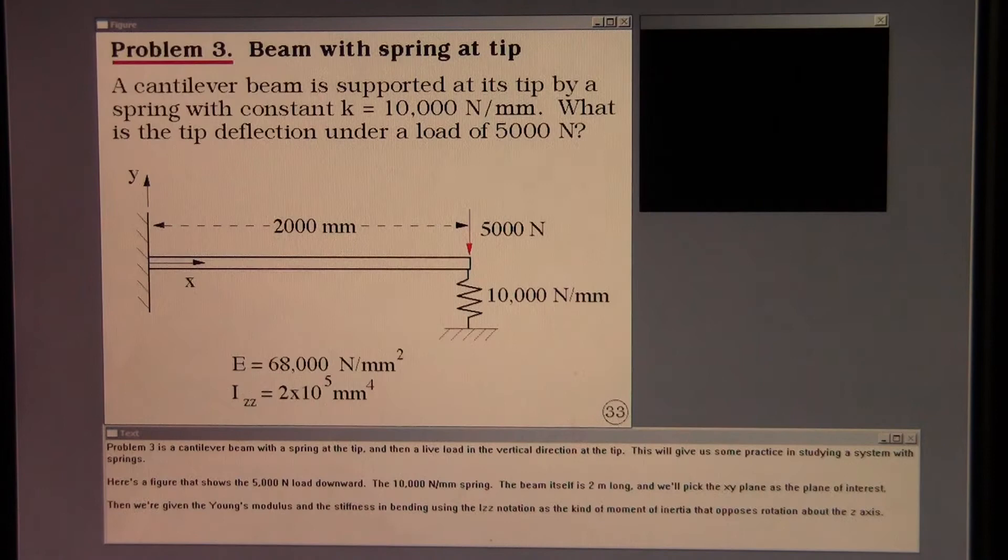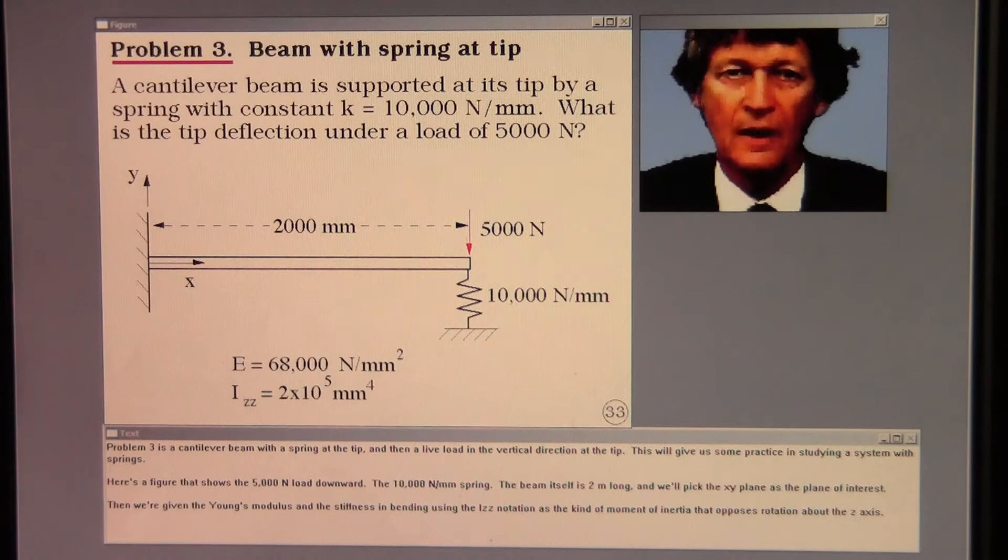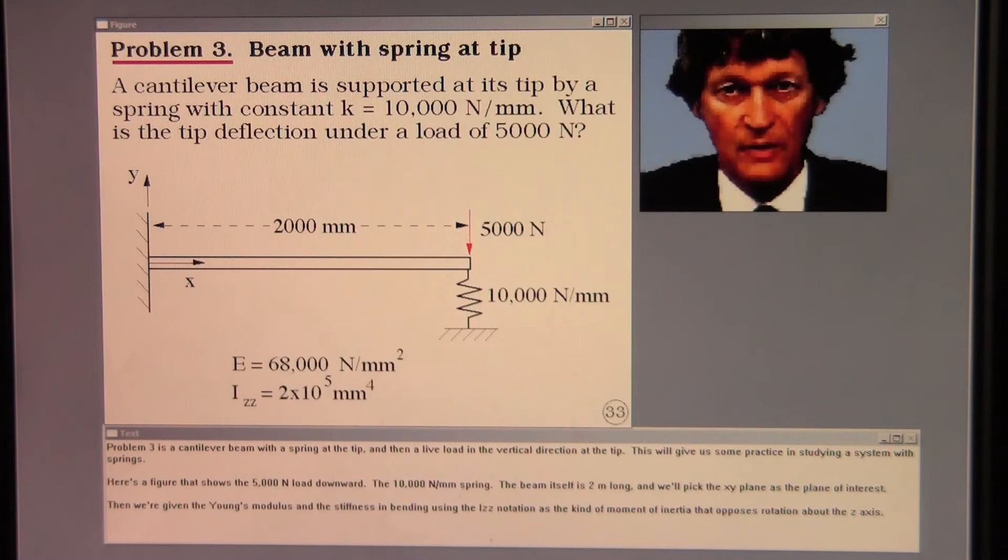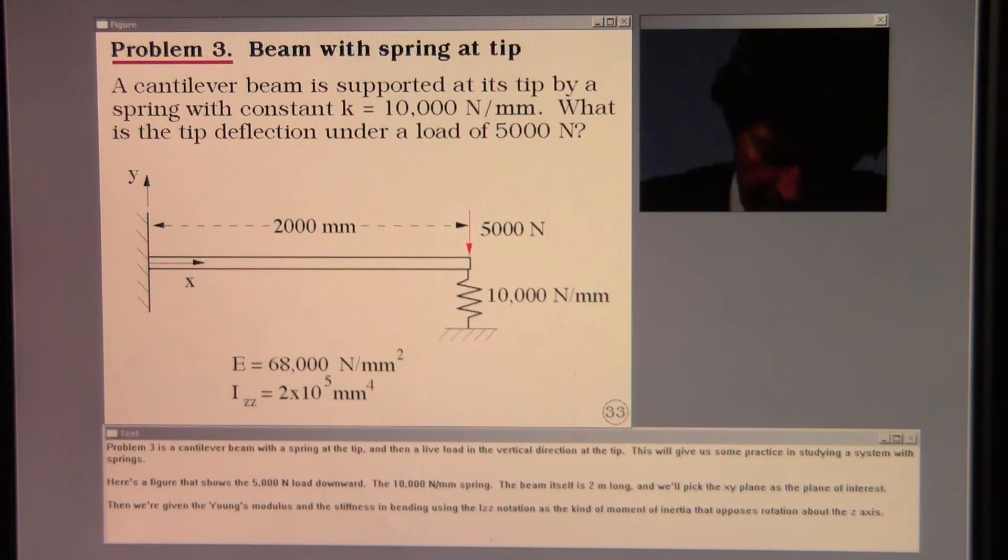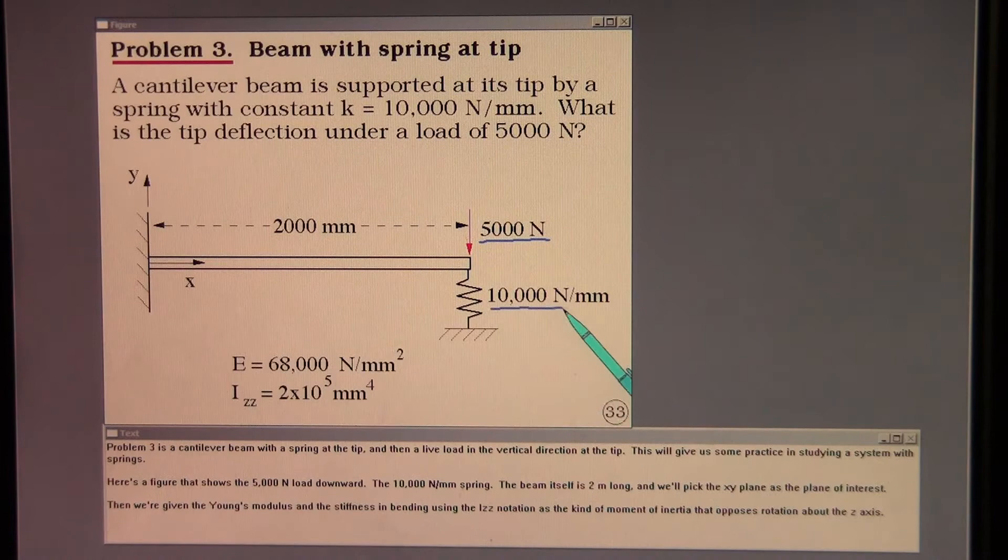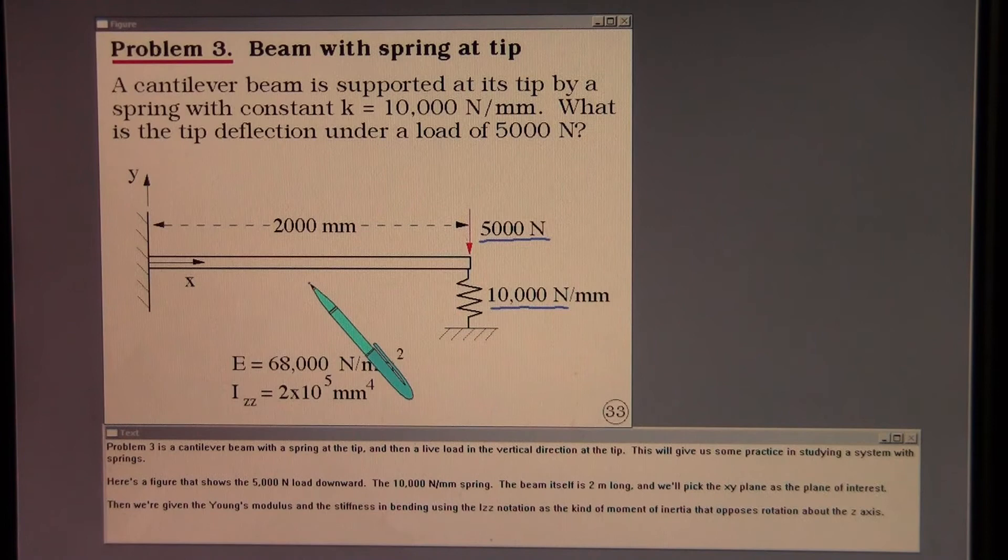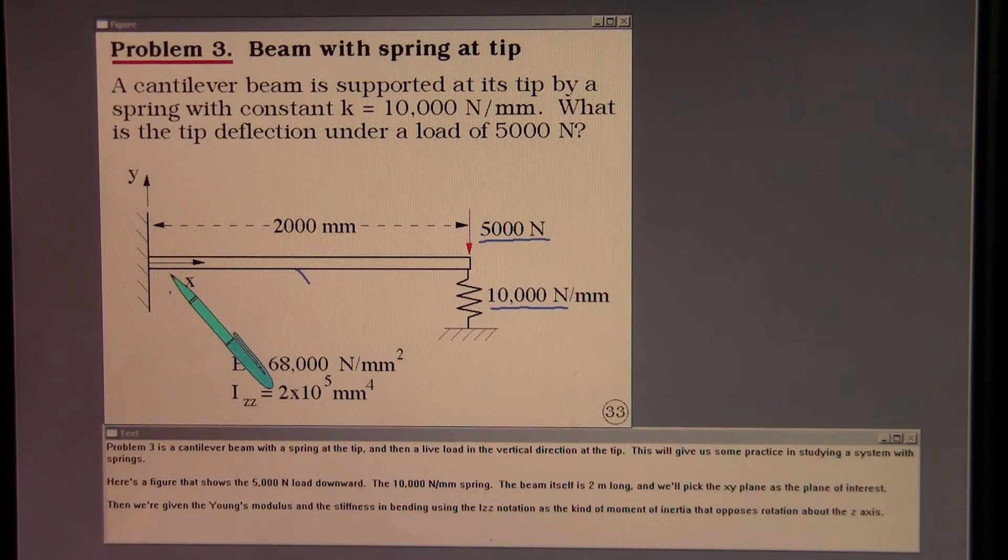Problem three is a cantilever beam with a spring at the tip. And then a live load in the vertical direction at the tip. This will give us some practice in studying a system with springs. Here's a figure that shows the 5,000 newton load downward. The 10,000 newton per millimeter spring. The beam itself is 2 meters long. And we'll pick the XY plane as the plane of interest.